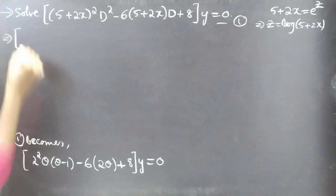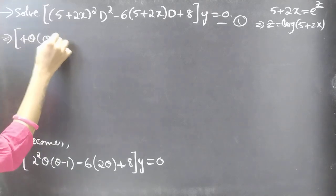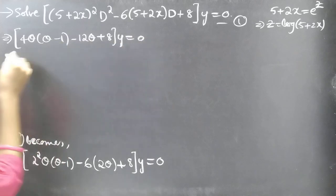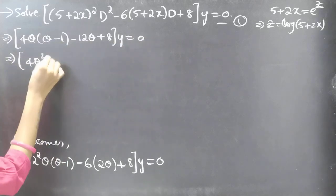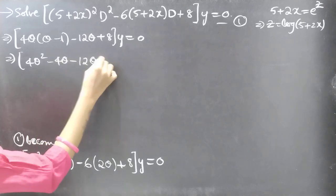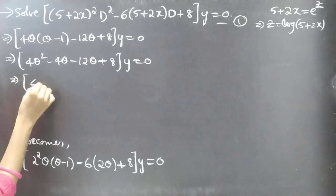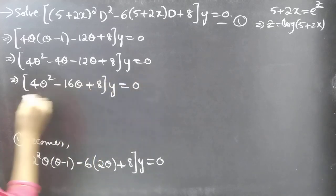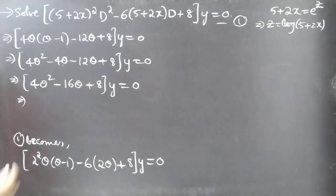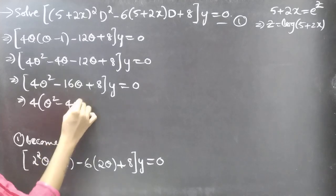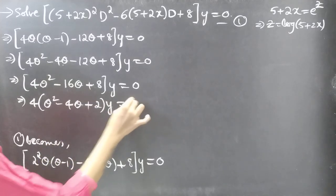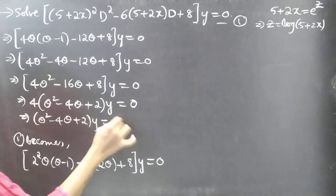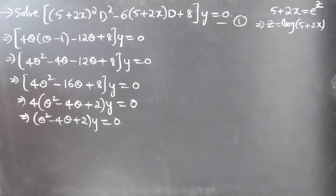This gives us 4θ(θ−1) − 12θ + 8, into y = 0. Expanding: 4θ² − 4θ − 12θ + 8 = 0, which simplifies to 4θ² − 16θ + 8 = 0. Taking 4 common from all three terms on the LHS gives 4(θ² − 4θ + 2) = 0, and therefore θ² − 4θ + 2, into y = 0. Consider this as equation 2.